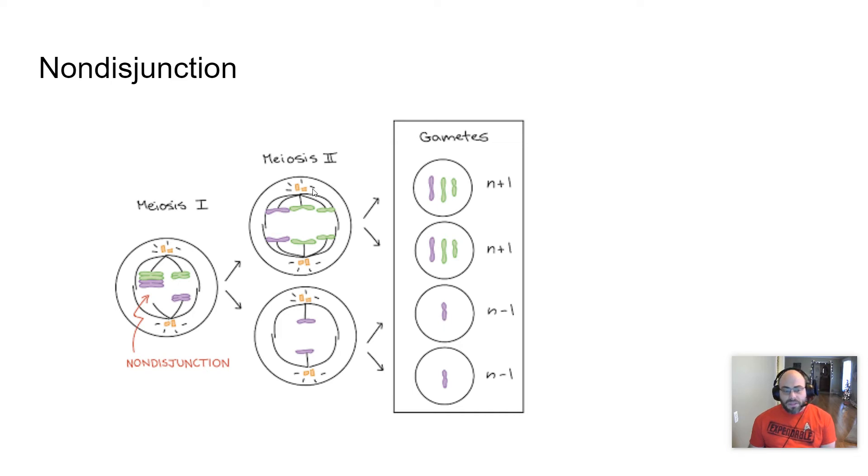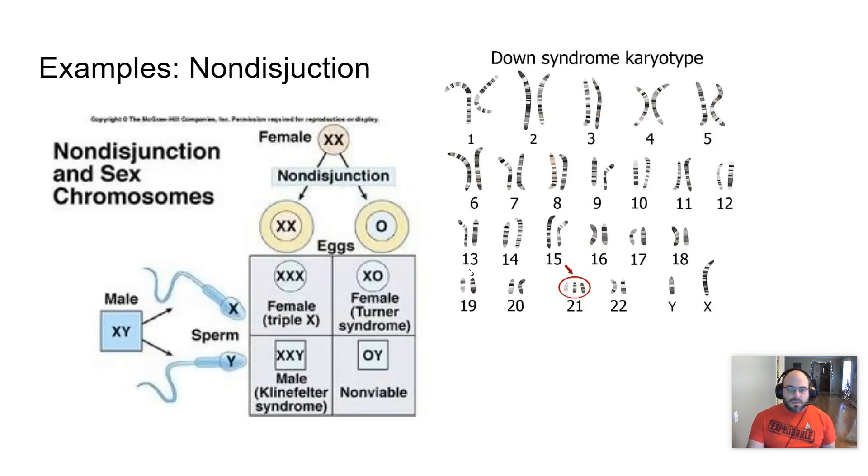Now if it happens in meiosis 2, you'll have two normal gametes and two that aren't normal. You have an n plus 1 and an n minus 1. And this can affect phenotype. A lot of times the resultant zygote would just be spontaneously aborted, meaning that the zygote would not work and it would just spontaneously just die like a miscarriage because the offspring wouldn't be viable. But in many cases that the offspring can live, there's just going to be some phenotypic genetic challenges.